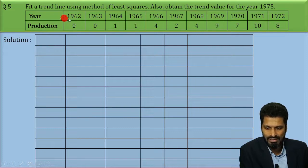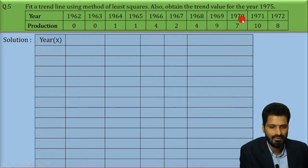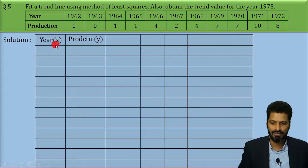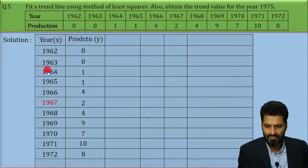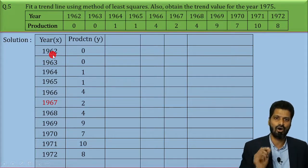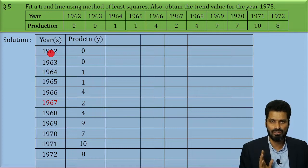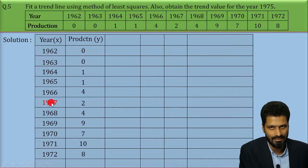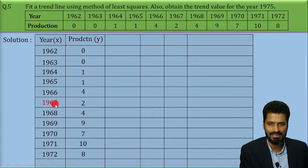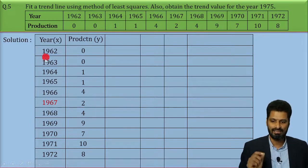The first column of our table will have the year values as given. The second column will have the corresponding production values. Now if you observe the question carefully, the years given total 11 observations — 11 meaning odd. So this question is based on odd observations. Because we have 11 odd observations, the central most value is 1967. So we have highlighted 1967 in red — this is the central most value of the given 11 observations.